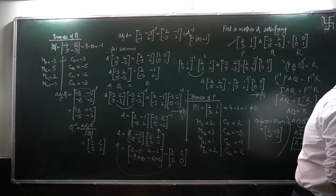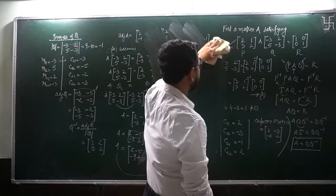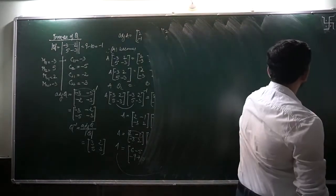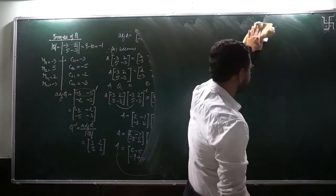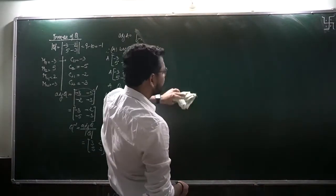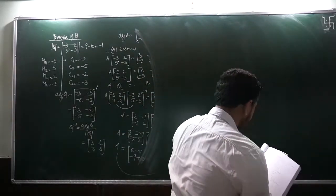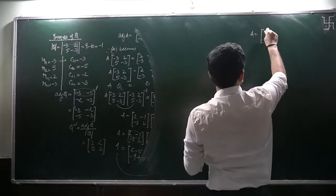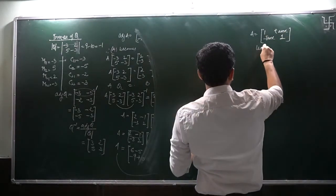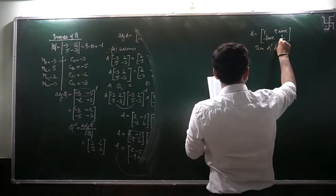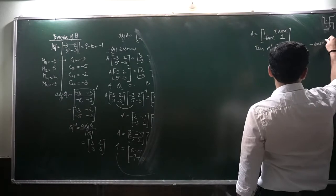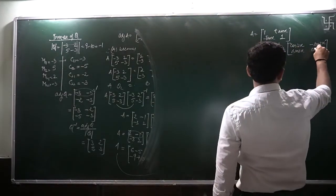Now continuing towards one more problem — an important one. Suppose we have been given a matrix involving trigonometric functions, a two-by-two matrix. Matrix A is given as [1, tan(x); -tan(x), 1]. You have to calculate A transpose into A inverse, and verify that equals [cos(2x), -sin(2x); sin(2x), cos(2x)].